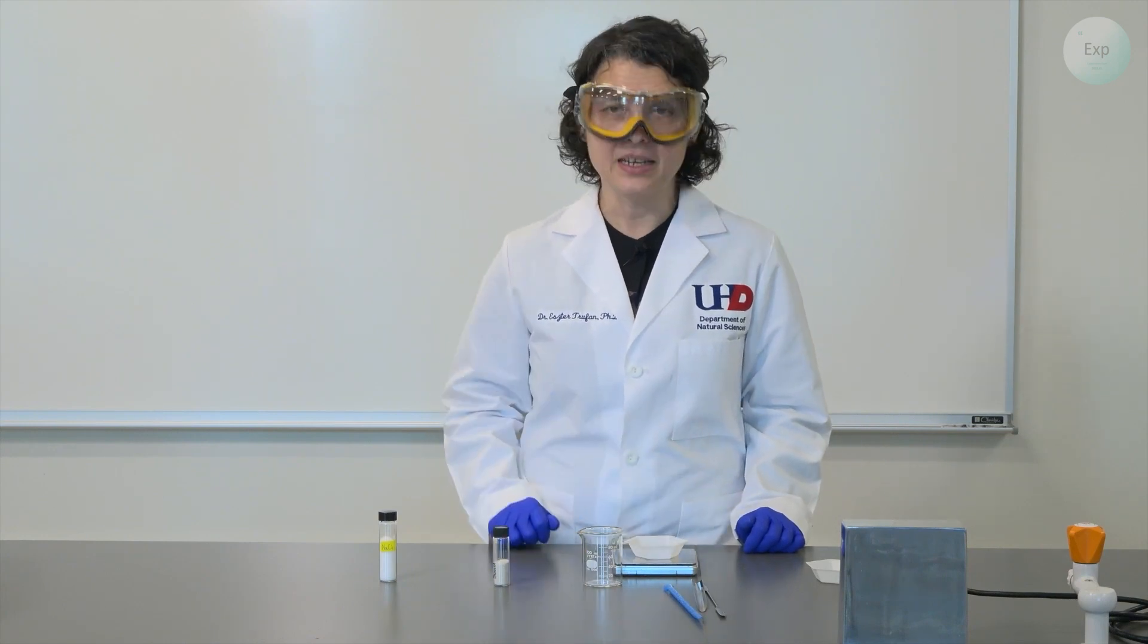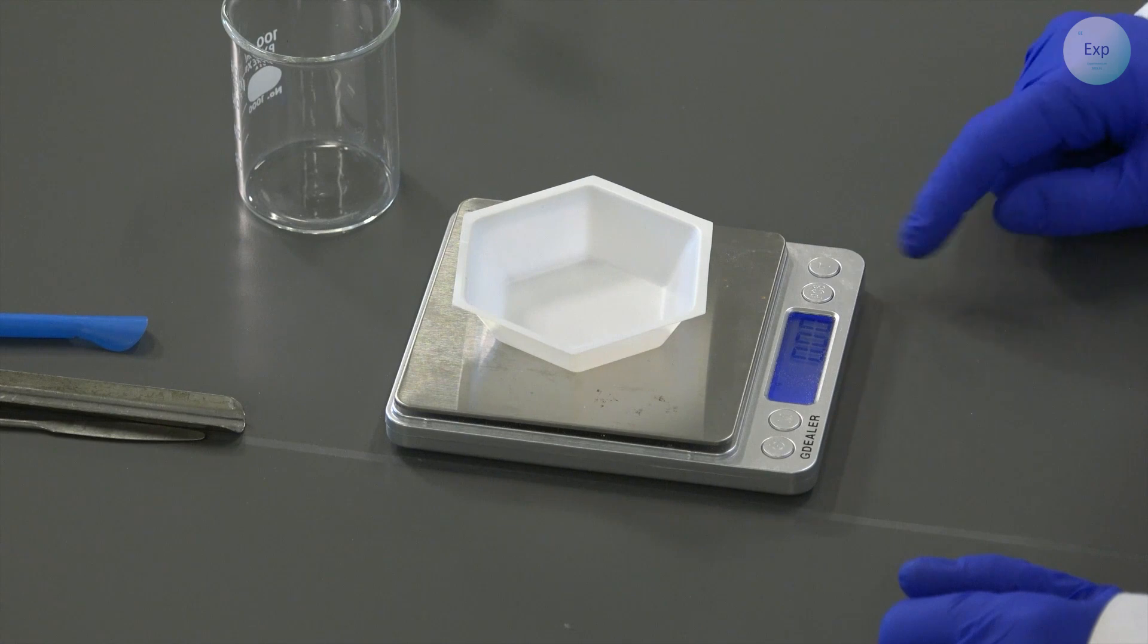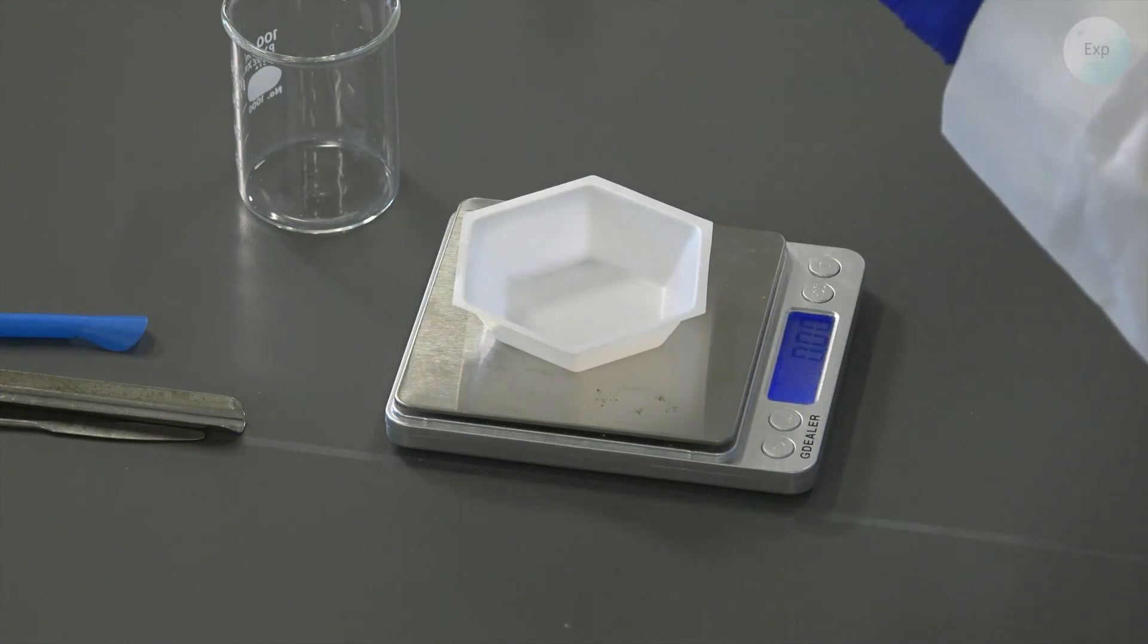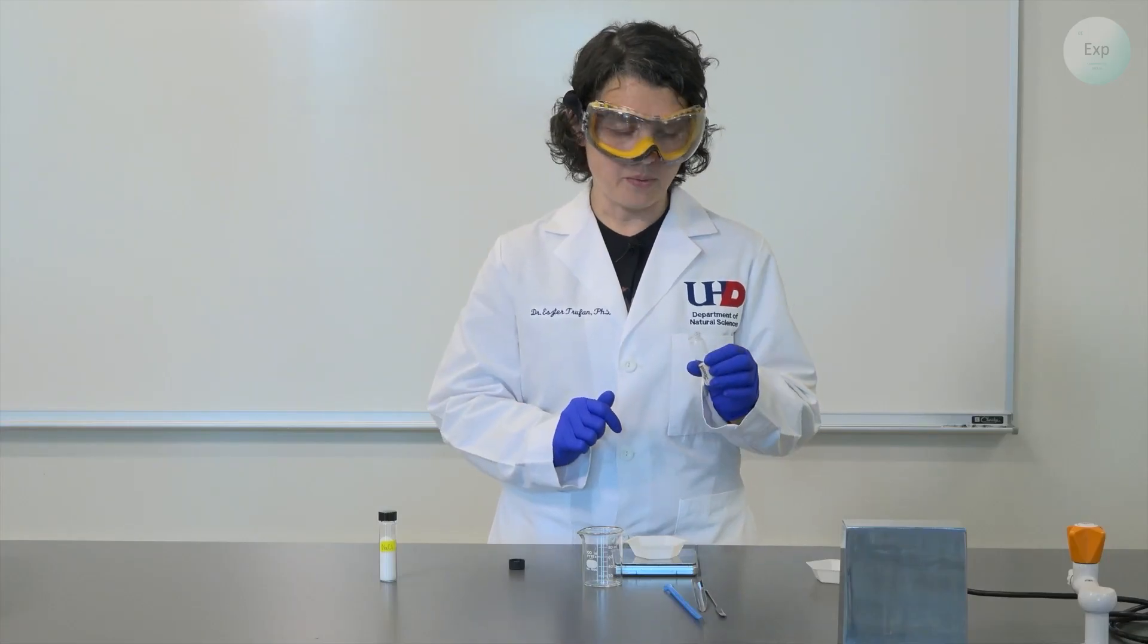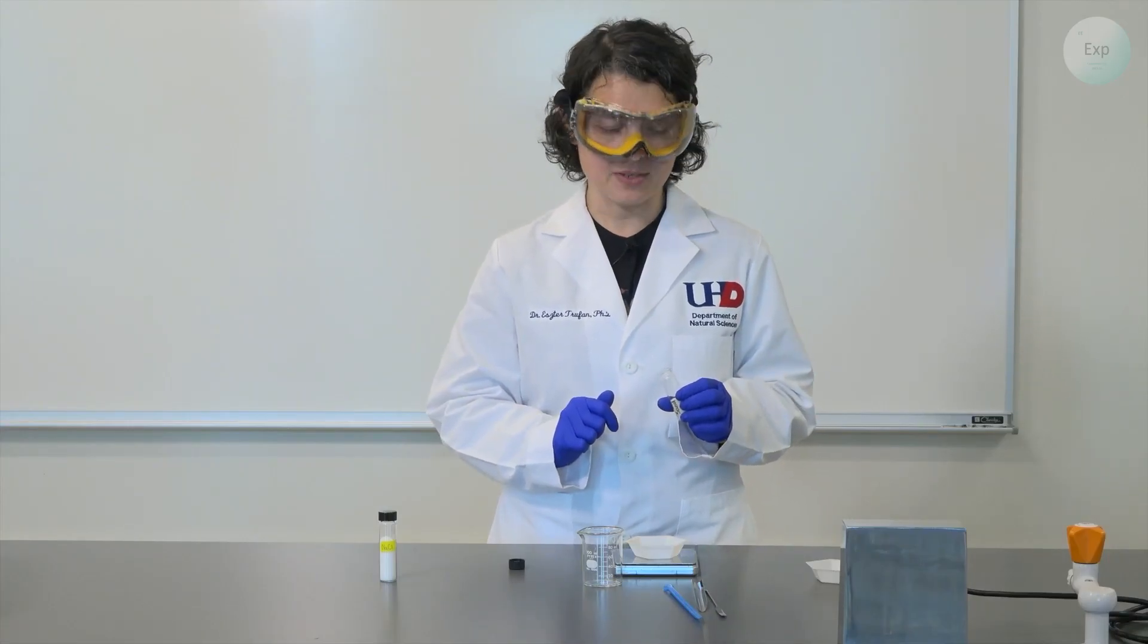The next thing I'm going to do is place my second weighing boat on the scale, tare it, and then use either a different spatula or the original spatula after it has been cleaned and dried to weigh out approximately five grams of the sand.